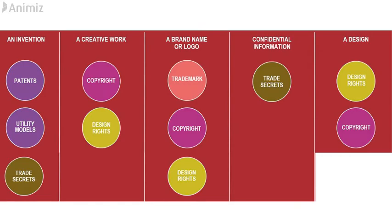There is one more way of classifying intellectual property rights. If you have an invention, you can get a patent, utility models, and trade secrets. If you have a creative work, you can get copyrights and design rights. If you have a brand name or a logo, you can have a trademark, copyright, and design rights. If it is confidential information, you can get trade secrets. And if it is a design, you can get design rights and copyrights.